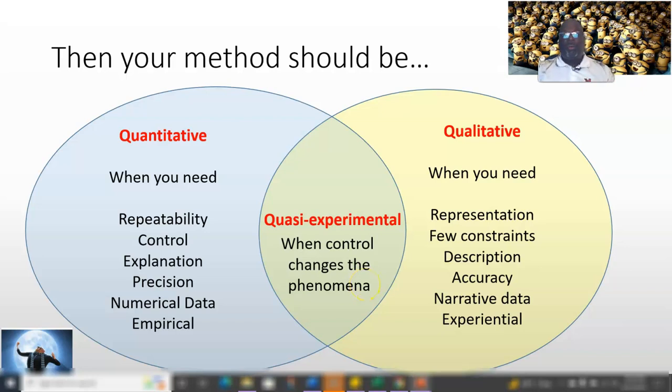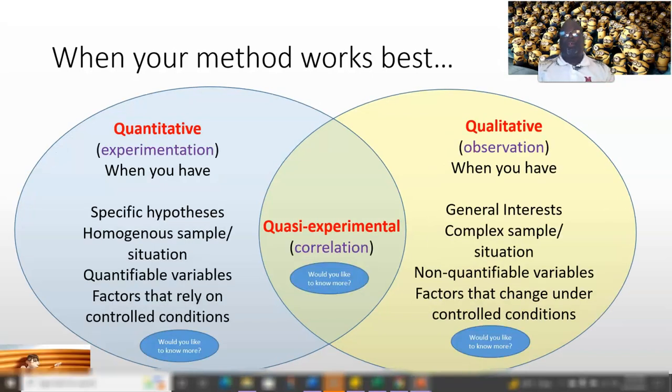When would you use these? Quantitative, which typically is experimentation, is great when you have specific hypotheses—a very specific question, you kind of know what you're looking for. When the sample that you're looking at is pretty similar and behaves in similar ways or has similar traits. When the things you're looking at can be quantified—you can put a number on them. And there are also things that operate really well under controlled conditions.